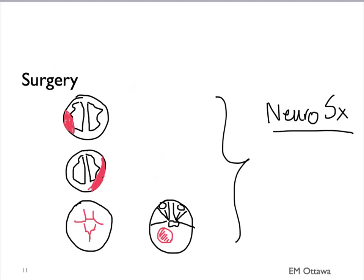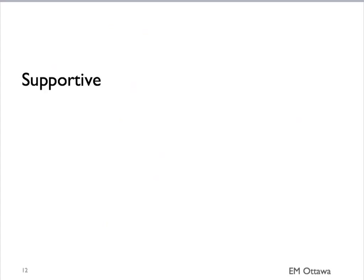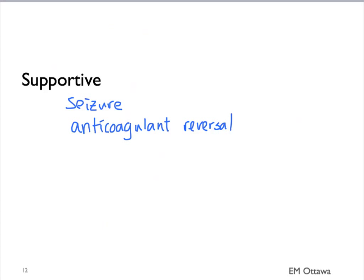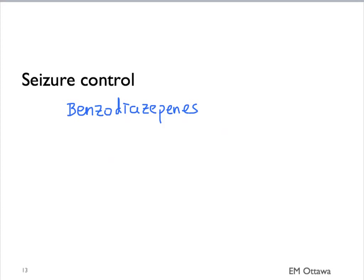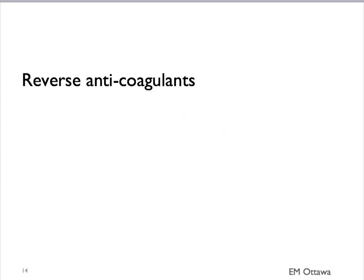For other bleeds, you may still wish to consult neurosurgeons on a case-by-case basis. Regardless of whether the patient needs surgery or not, they all need supportive treatment. That consists of seizure control, reversing anticoagulants, and decreasing intracranial pressure. We will give benzodiazepines if the patient is seizing. We should also provide analgesia and sedation, particularly if the patient is intubated. If the patient is on anticoagulants, we need to reverse them — that might consist of vitamin K, FFP, or specific clotting factors.